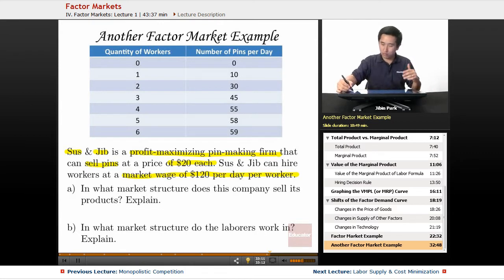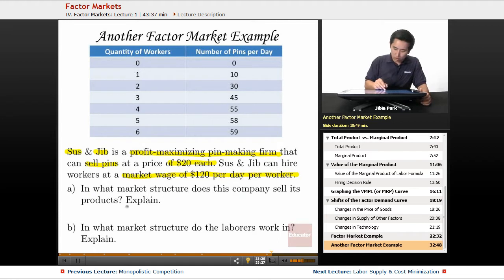The first question doesn't really have anything to do with the numbers, so sometimes they'll throw a bunch of numbers at you and the question is going to test whether you understand the economics rather than being able to manipulate the numbers. What market structure does this company sell its product in? Well, you know they're selling at $20 each, so this is the product market.